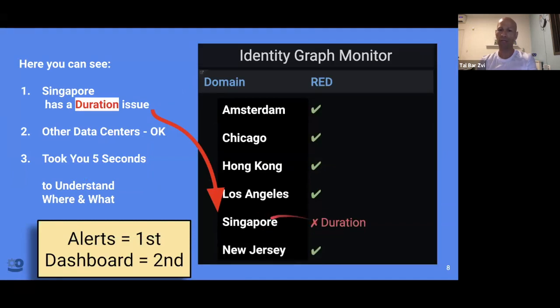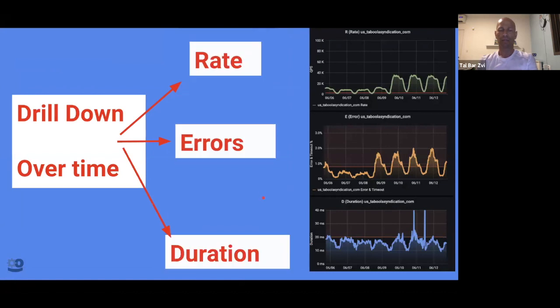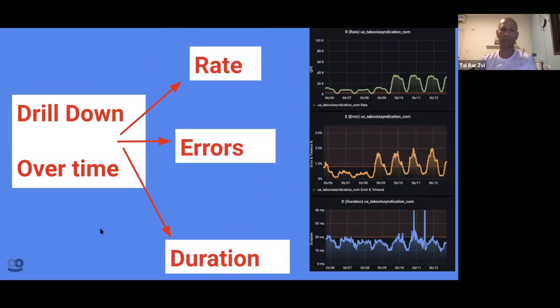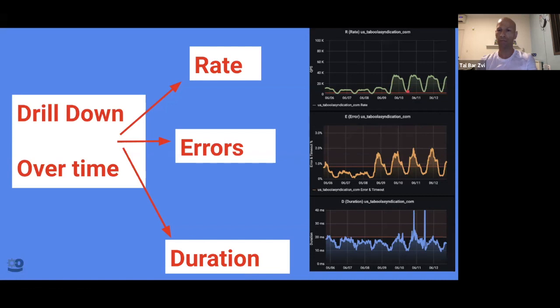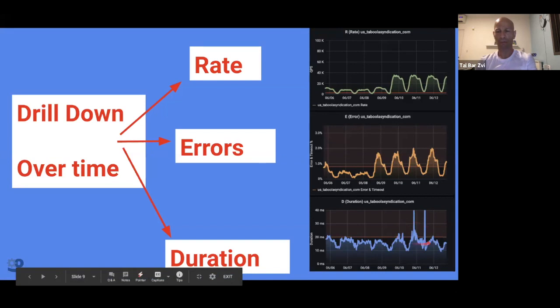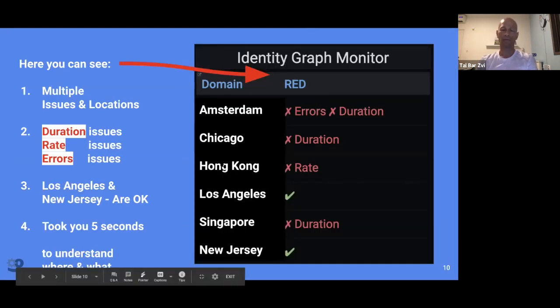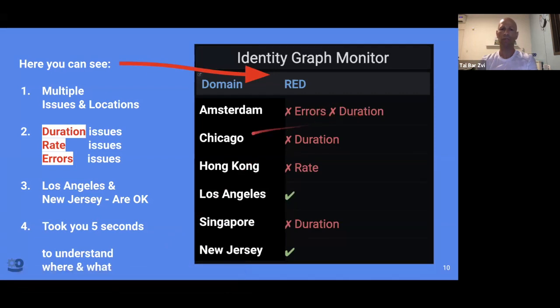That will do a drill down. Of course, when you have this duration issue in Singapore, you want to see the drill down. So you will see it over time. Here you can see the rate over time. Here you see that we have problems with the rate every day, almost every day. And here it's okay. You can see here the error, error issues started around this point. And it happens daily. And you can see the duration issues started a few days ago. And it gives you the basic overview as a black box of your service. Here you can see multiple issues. We have air issues. We have duration, duration issues. In Chicago, only duration and Hong Kong rate issues. LA and New Jersey are clean. Took you five seconds to see the global situation around the world. Would you like to have the same thing for your services?